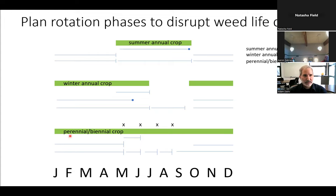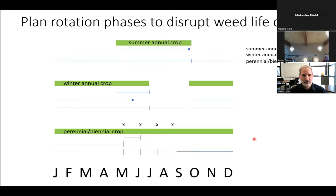If you've got a perennial or biennial crop — say a forage legume — you're going to be taking multiple cuttings. That can knock back perennial and biennial plants and also disrupt annual life cycles. A perennial crop like a forage legume can do a nice job of providing a disruptive environment for perennial weeds.